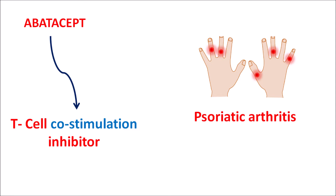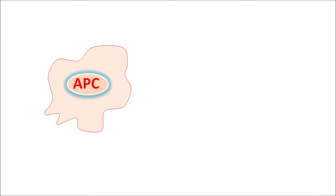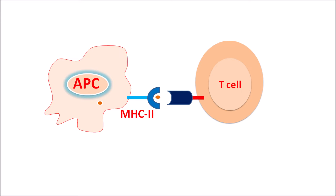Now let us see how this drug acts. Antigen presenting cells can stimulate T-cell activity. These antigen presenting cells contain peptides released from the antigen, which are expressed by surface molecules MHC2. The peptides from the antigen expressed by MHC2 molecules are recognized by T-cells, which have a T-cell receptor that forms a complex with MHC2, leading to recognition of the antigen peptide.